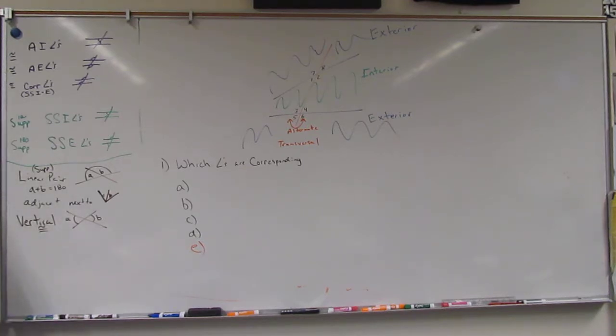A couple things that you might have forgotten. Linear pair - two that add up to be 180 degrees. Adjacent - just two angles that are next to each other. And vertical - they're across from each other. Vertical are congruent also.